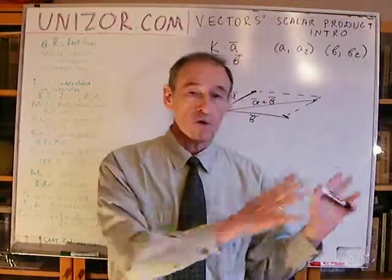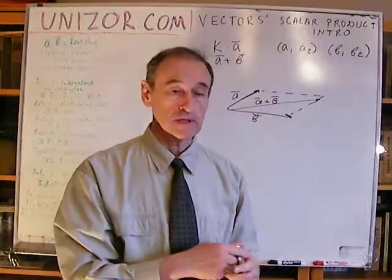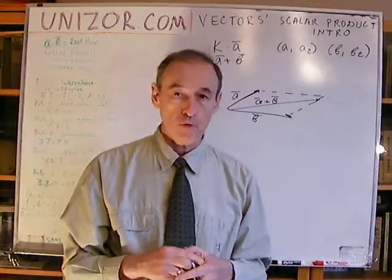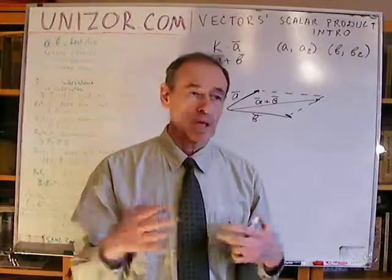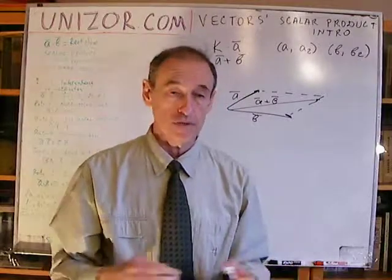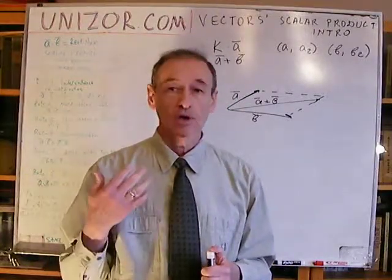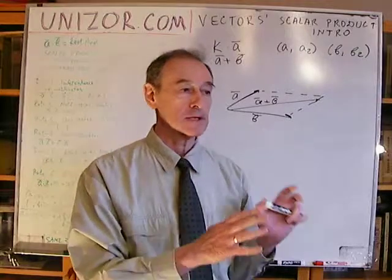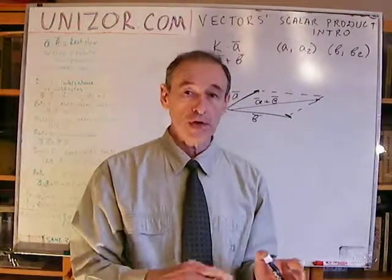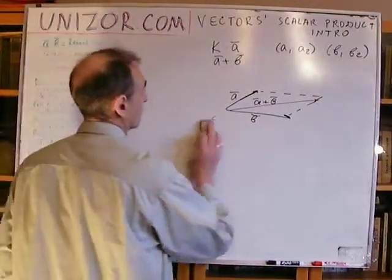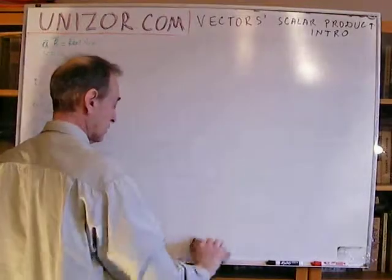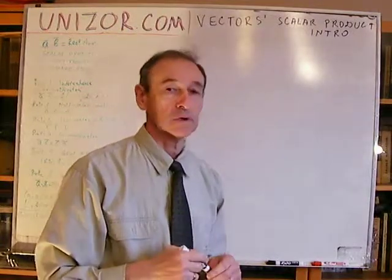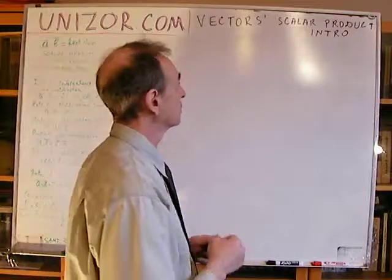These are old operations which we have learned. This lecture is dedicated to a completely new operation which we can perform with vectors. Vectors came from physical representation of certain objects, like speed. A scalar product also has certain physical meaning, which we will address later on. For now, let's concentrate on an abstract operation on two vectors and examine it first in tuple representation, in coordinate form. The next lecture will be dedicated to their geometric representation.